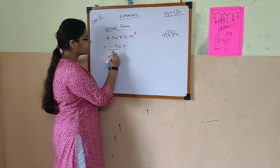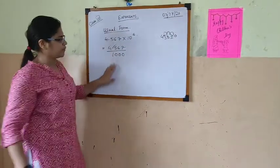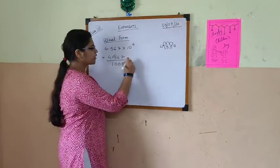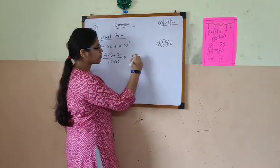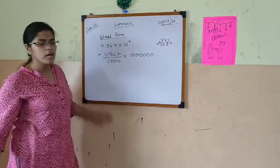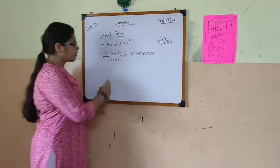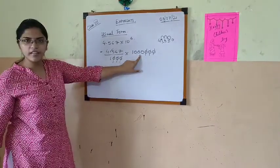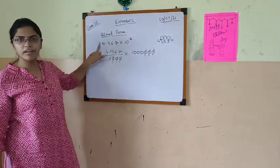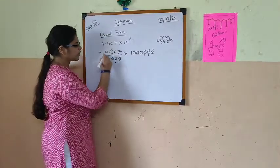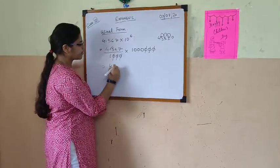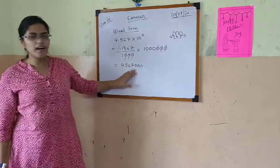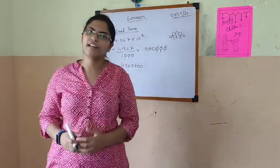So that is why here we will have 1000. And here we are having 10 to the power 6. So that means we can write 6 zeros: 1, 2, 3, 4, 5, 6. So if I cancel these two, only 3 zeros are remaining. And here no decimal point is there. So that means this number will become 4,567 then triple zero — 1, 2, 3. So this is the usual form of writing an exponent.